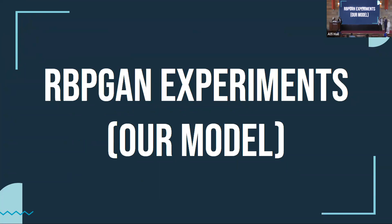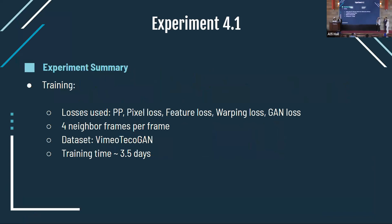After integrating our model — with RBPN as the generator and TQGAN's discriminator — the model was ready for experiments. In Experiment 1, we used all the losses: ping-pong loss, pixel loss, feature loss, warping loss, and GAN loss. We used four neighboring frames per target frame. Note that the number of neighbors affects model size, since each neighbor is fed into a separate block in RBPN. We tried to minimize neighbors while maintaining good accuracy. We used the Vimeo-TQGAN dataset and training took around 3.5 days.